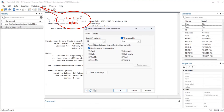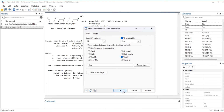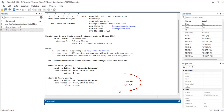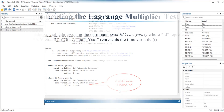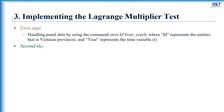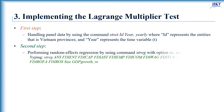Or you can click this command on the stats menu to avoid typing errors. In this case, ID represents the entities, that is, Vietnam provinces, and year represents the time variable. Now that the panel data has been set up, we can proceed to run the random effects model using the STATA command xtreg, with the dependent variable and 13 variables, including 11 independent variables and 2 control variables in our panel data.